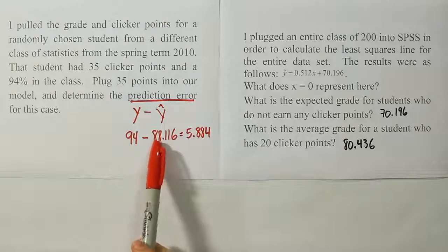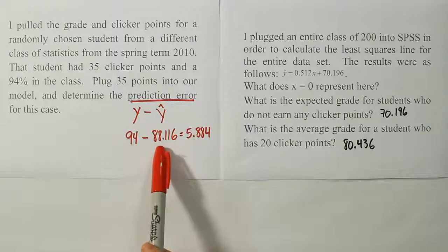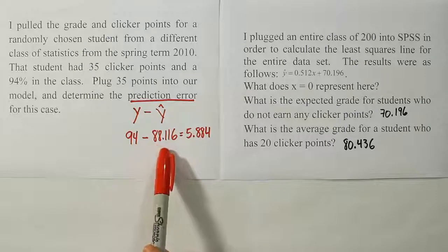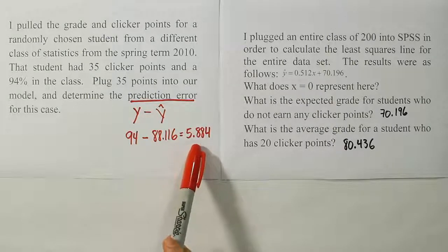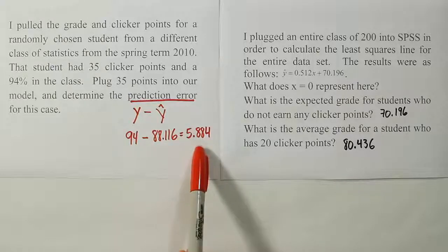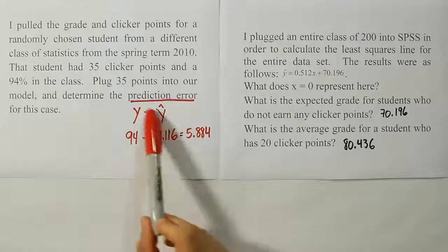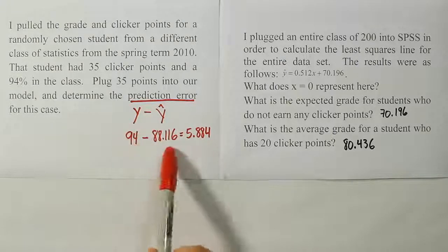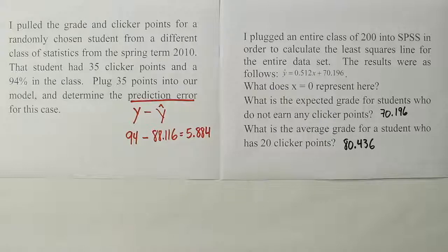So 94 minus 88.116 produced the answer 5.884. And at that moment, we have not an estimate of the prediction error, pardon me, the actual prediction error for that particular point. So prediction error is almost 6 points.